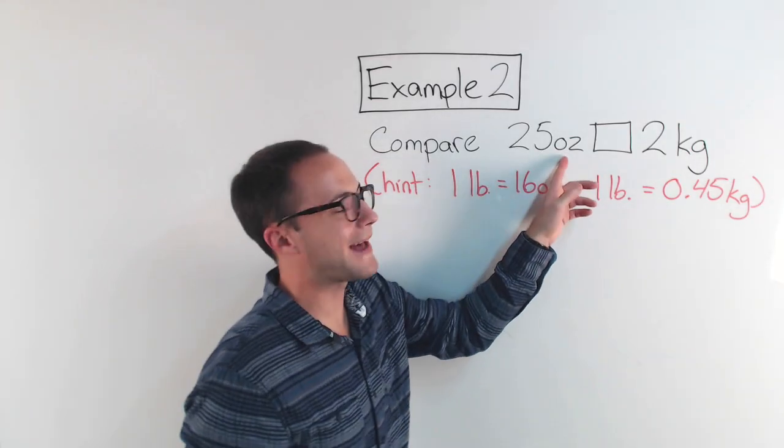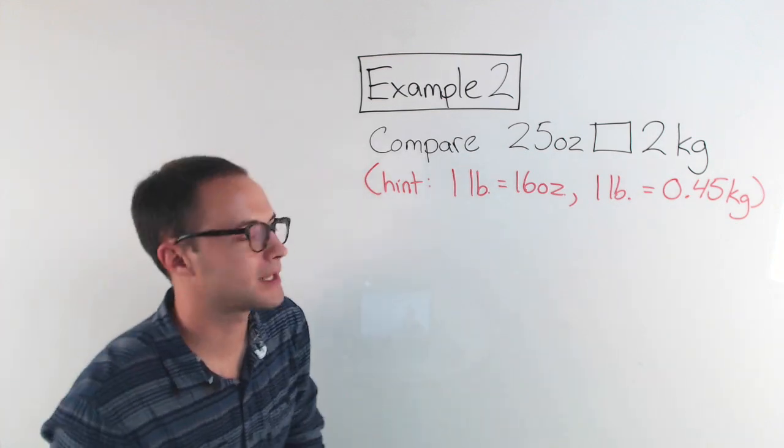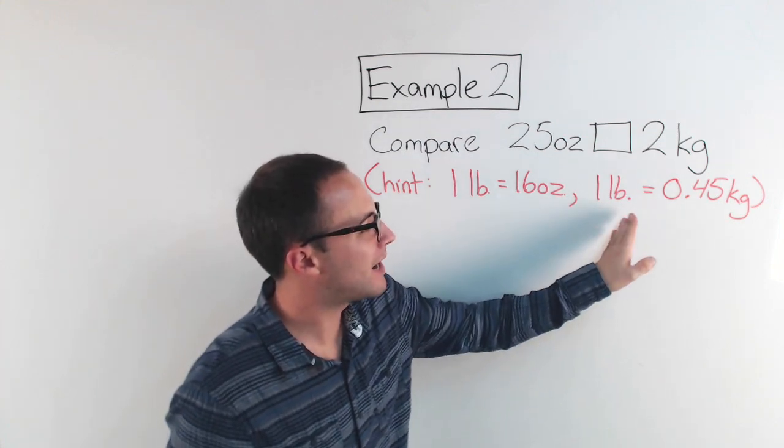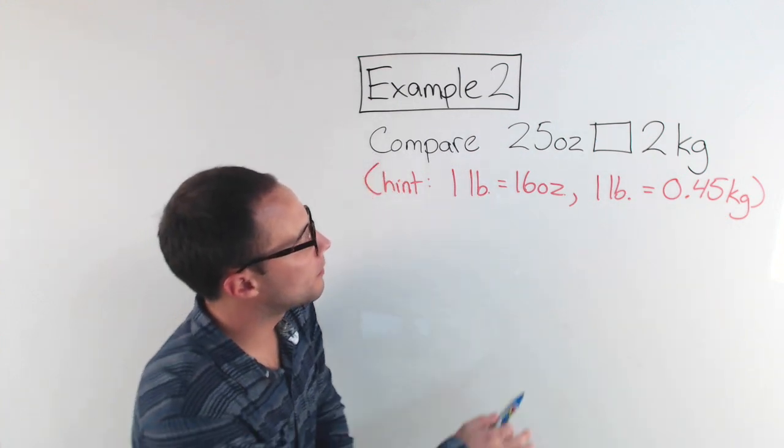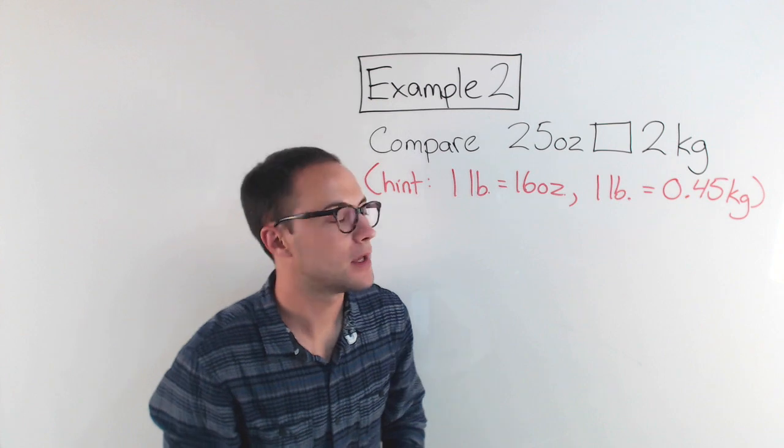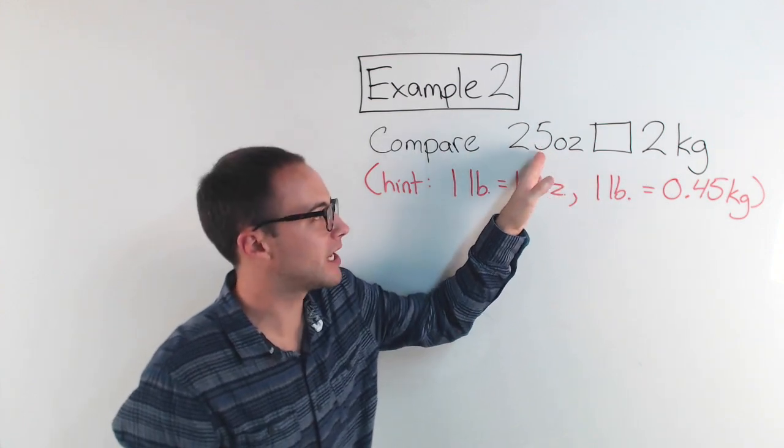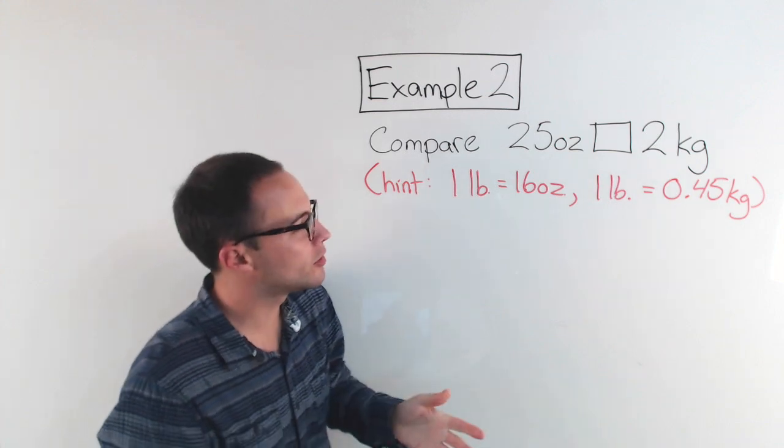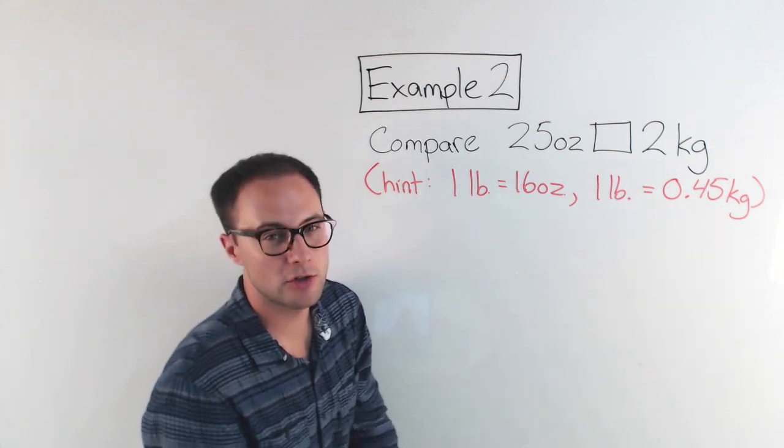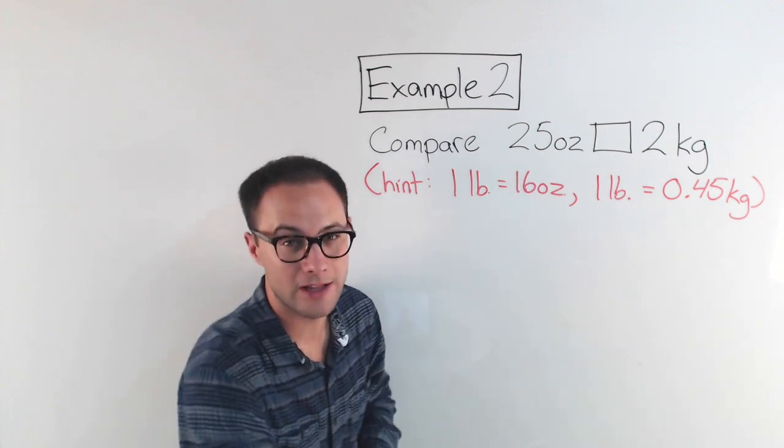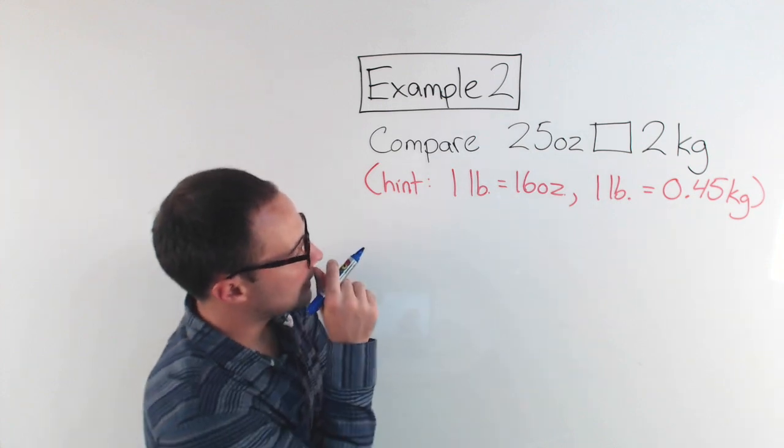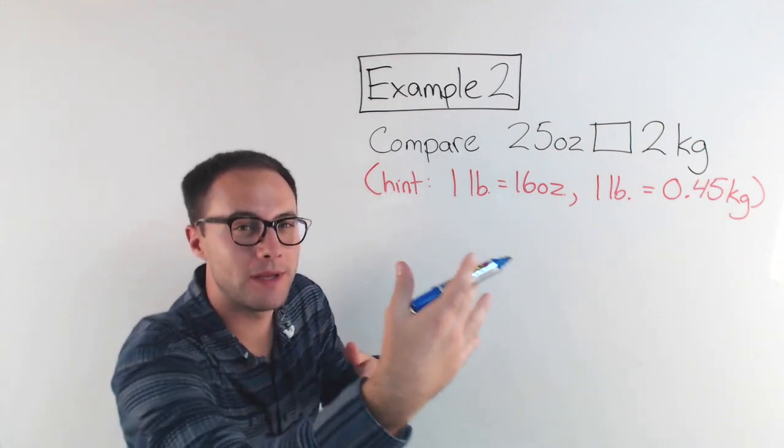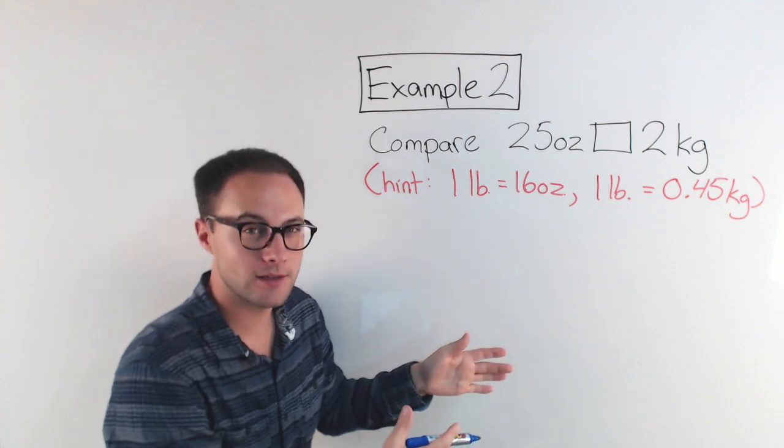Here's example number two. Compare 25 ounces with 2 kilograms. See which one's greater than or which one's less than. So if you see this hint, I said one pound is equal to 16 ounces, and one pound is equal to 0.45 kilograms. So to be able to compare these, I need to make sure the units are the same. So either I go from 25 ounces and convert them into kilograms, or I convert these 2 kilograms into ounces. It doesn't really matter which one you do. Some might be easier than others, but in this case, I'm just going to do it one way. I'm going to go from 25 ounces to kilograms, and then compare them that way. So first, if you notice, I don't have a conversion factor for going straight from ounces to kilograms. So I got to do an intermediary step. I got to go from ounces to pounds first, and then from pounds to kilograms.